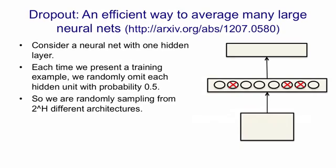What this means is we're randomly sampling from 2 to the H architectures, where H is the number of hidden units. It's a huge number of architectures. Of course, all of these architectures share weights. That is, whenever we use a hidden unit, it's got the same weights as it has in other architectures.